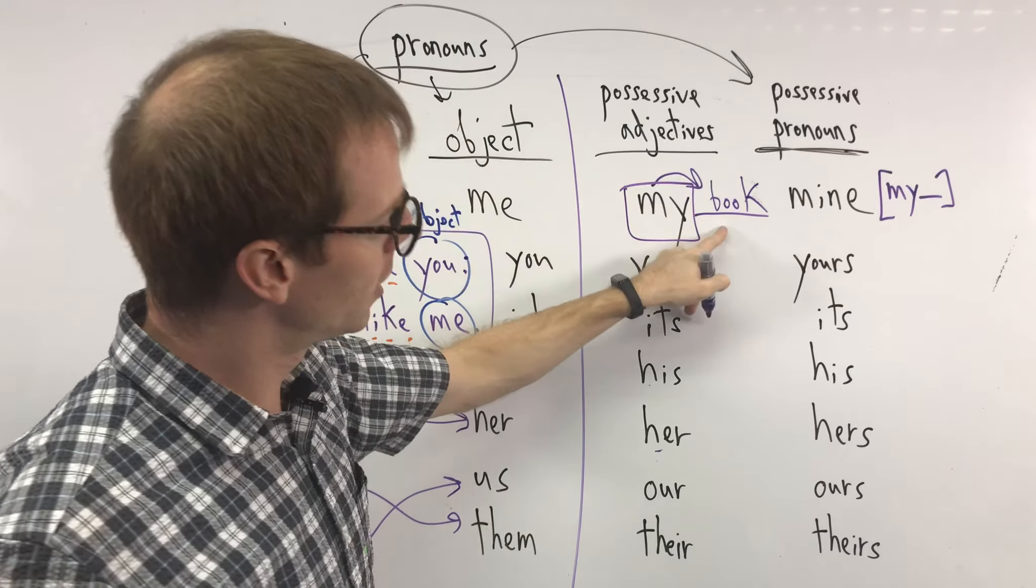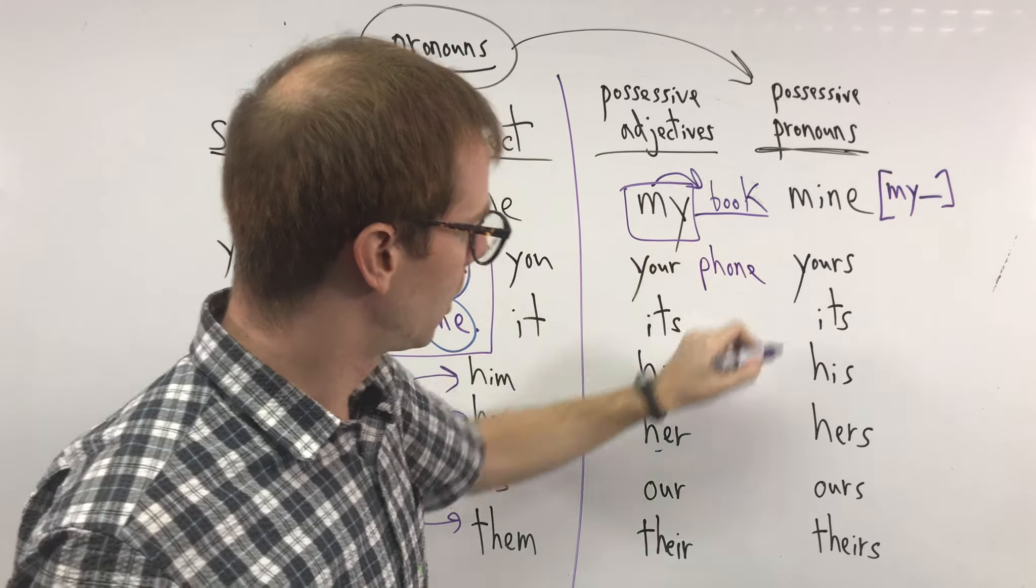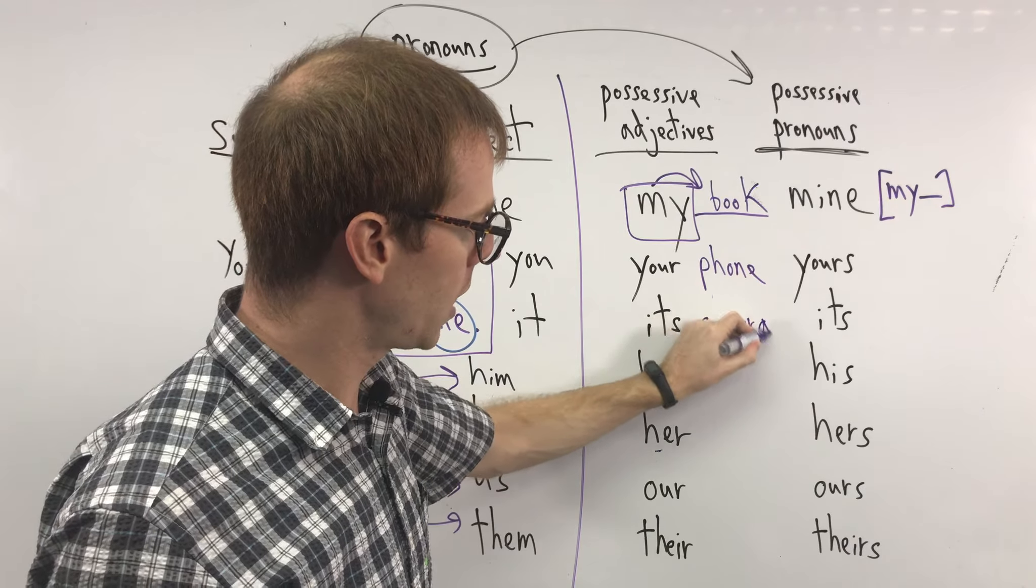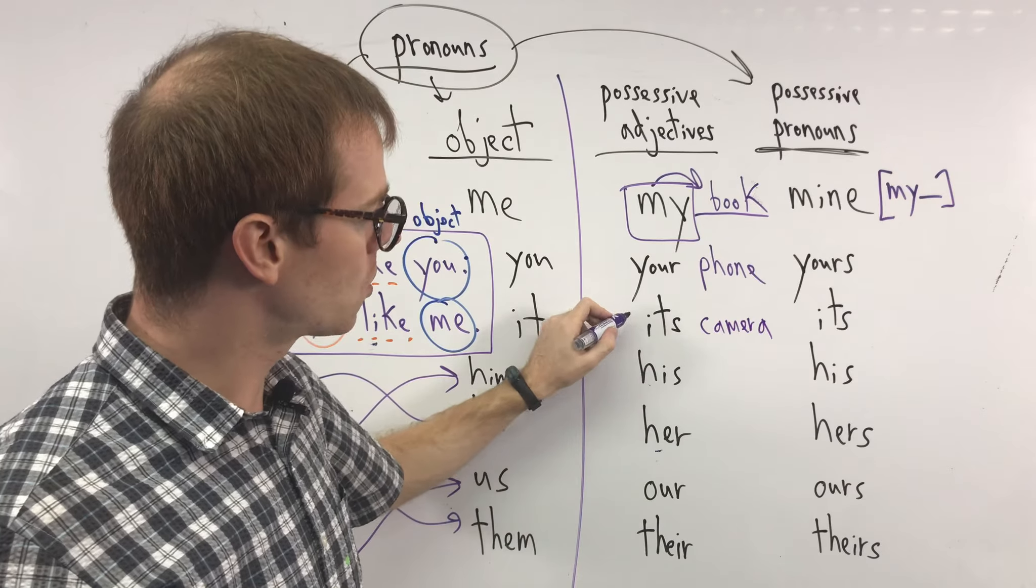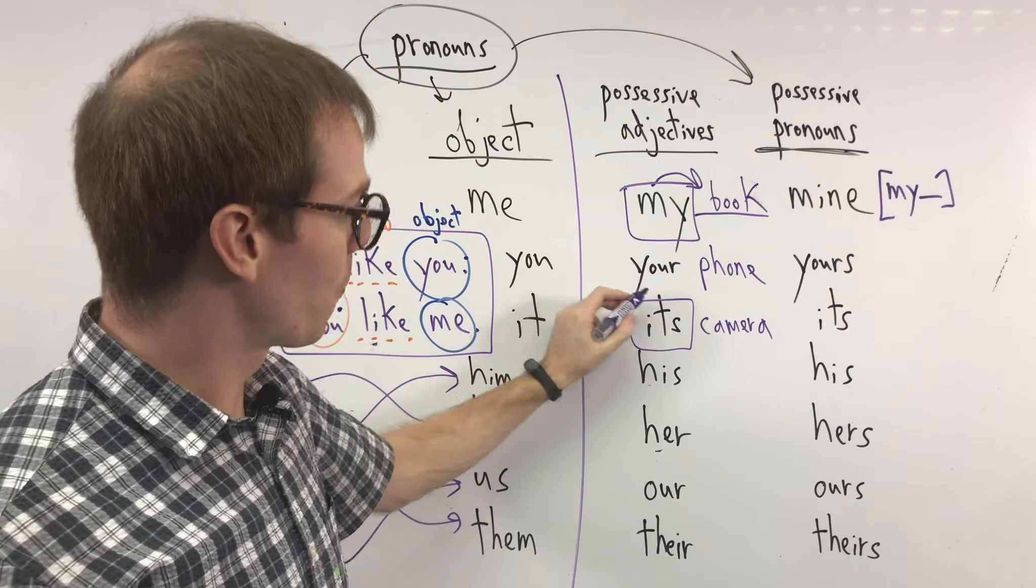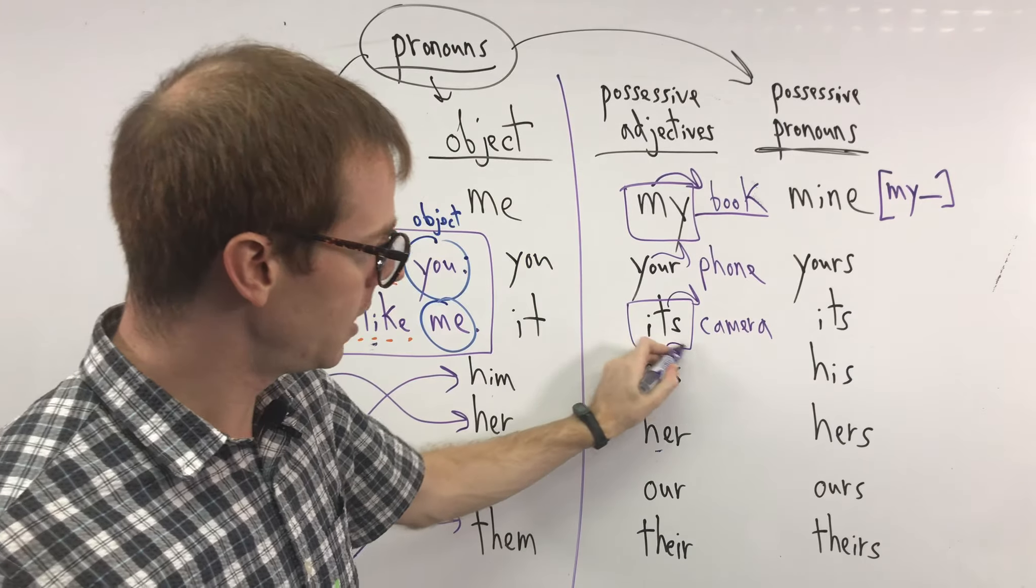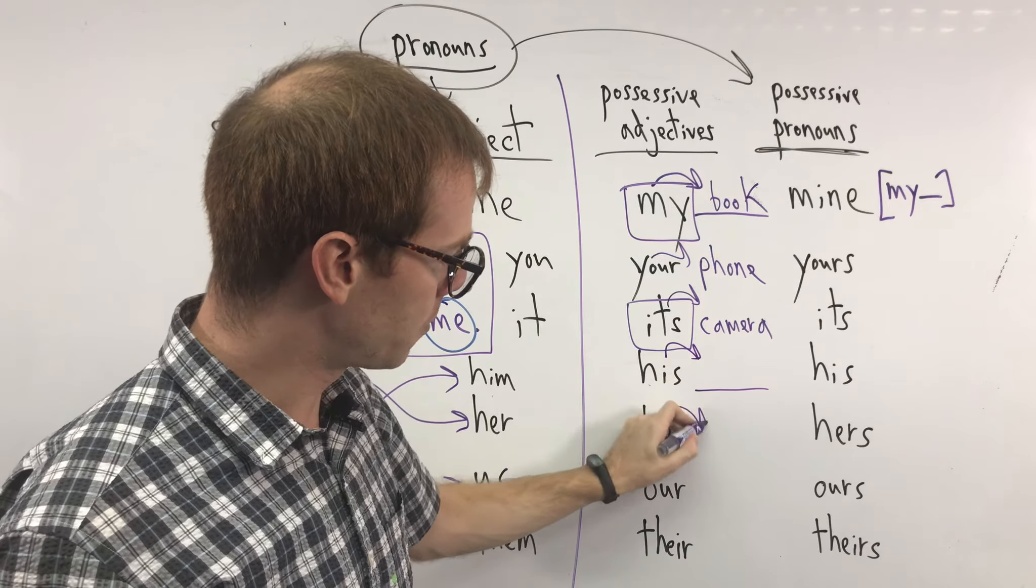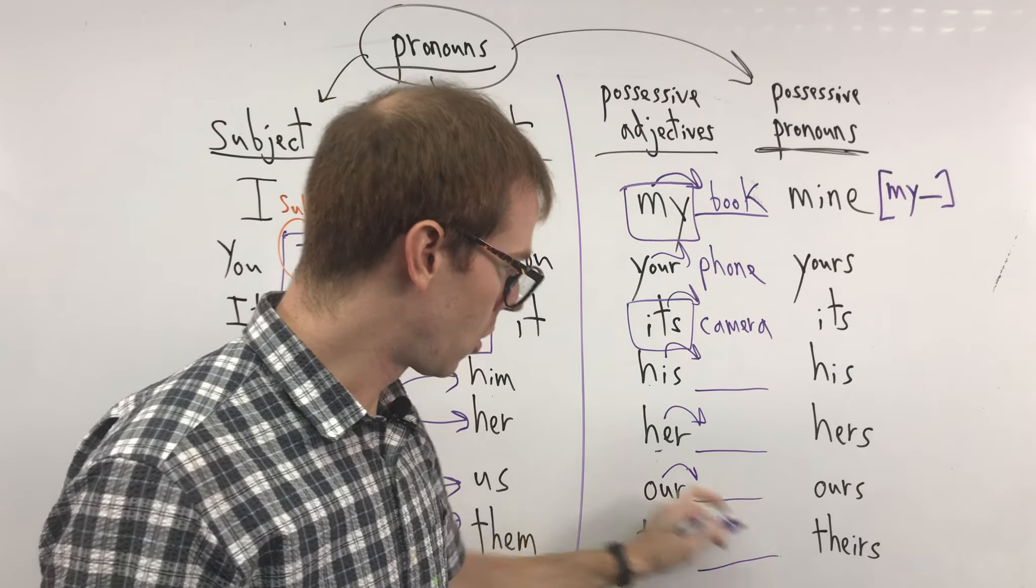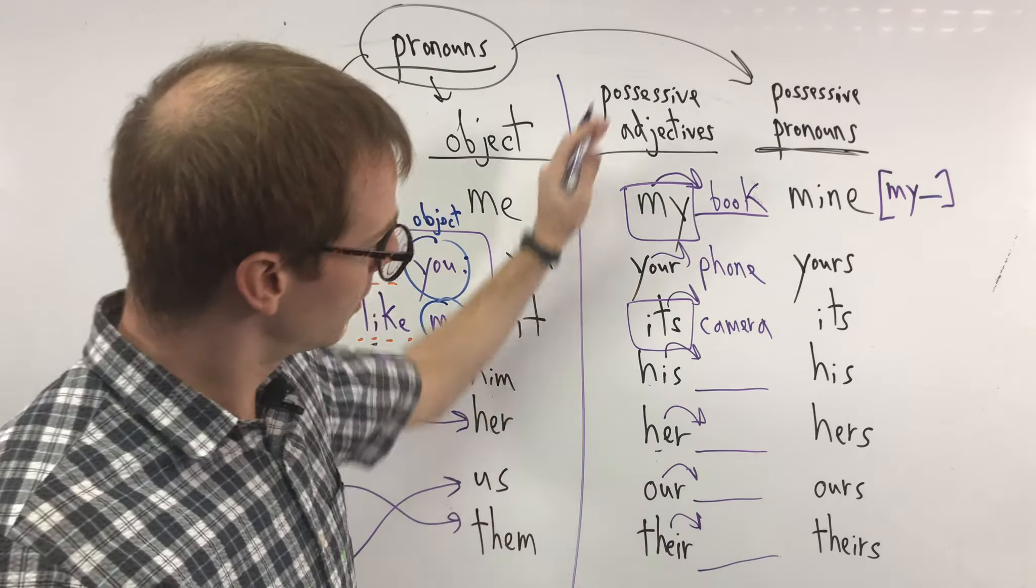But this one, if I say my book, it's actually an adjective. My book, your phone, its camera. If you have the word its, this is usually a thing or always a thing, sometimes animal. So we would do its camera, your phone. These always follow this pattern. We need something after. And you can choose her purse, his money, our teacher. Pretty simple.